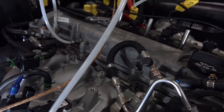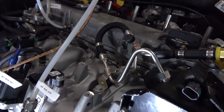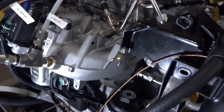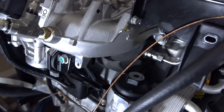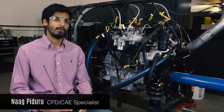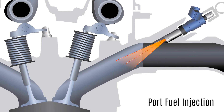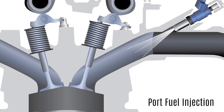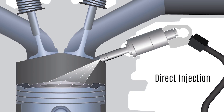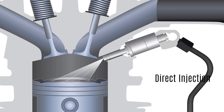This is a GM LNF engine — an inline 4, 2-litre turbocharged engine with gasoline direct injection. There are a couple of different ways a GDI-based engine differs from a PFI. For a port fuel injector, you're essentially injecting inside the intake manifold, as opposed to a GDI engine like this, where a direct injector injects fuel directly into the combustion chamber.